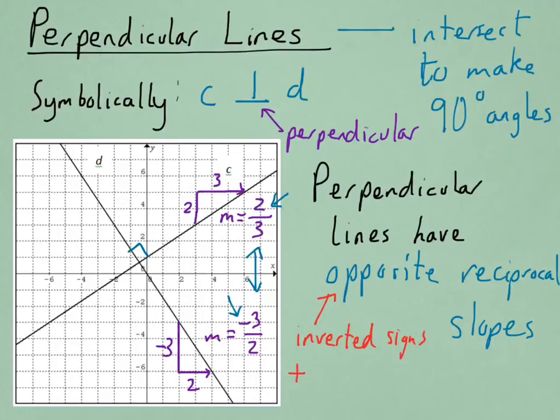The word opposite here indicates that we have inverted signs. In other words, positive became negative, or negative becomes positive. So, one slope out of two perpendicular lines will be negative. The other will be positive.